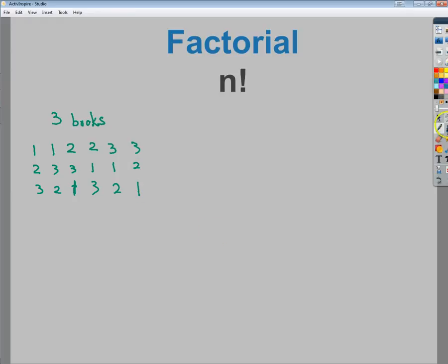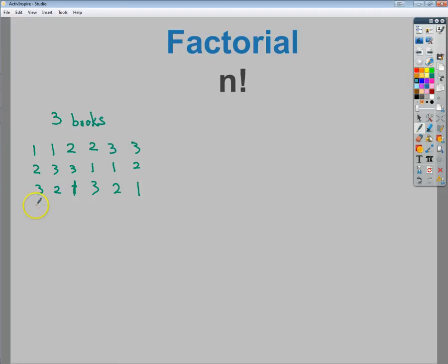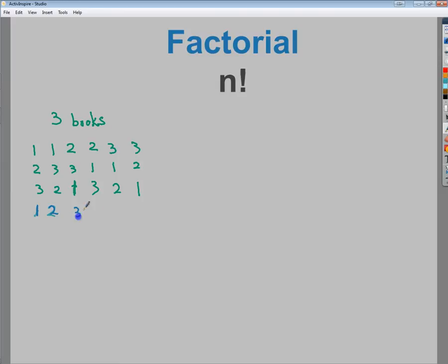So basically I have six, one, two, my color's not great, one, two, three, four, five, six total possibilities if I arrange them.